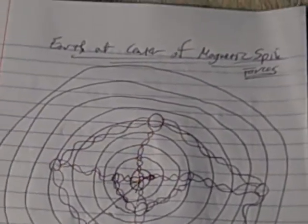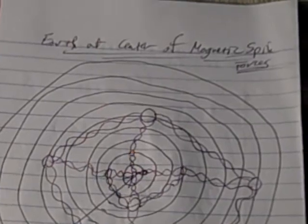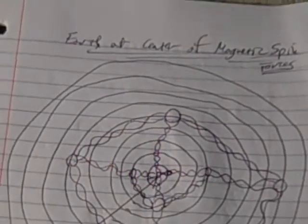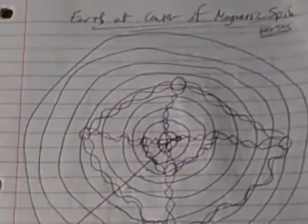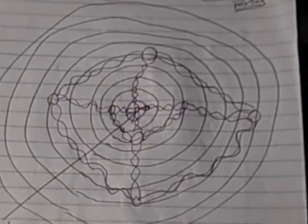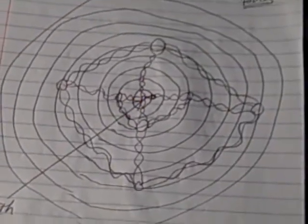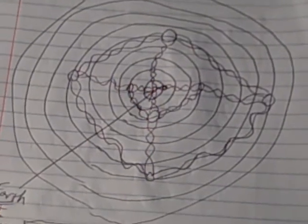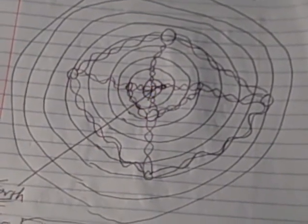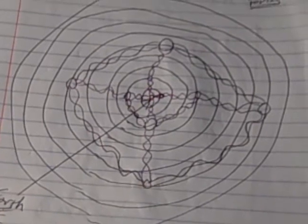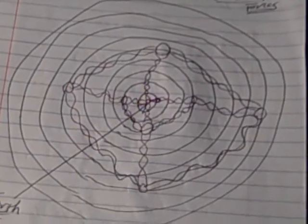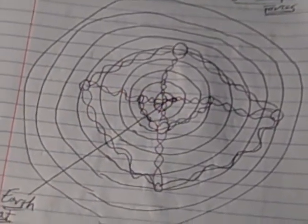The Earth at the heading here says the Earth at center of magnetic spin forces. So what I've done is I've taken a geocentric kind of model, Earth at center, and I just kind of did all the planets here. I didn't name them because every time I did it, it got too messy.